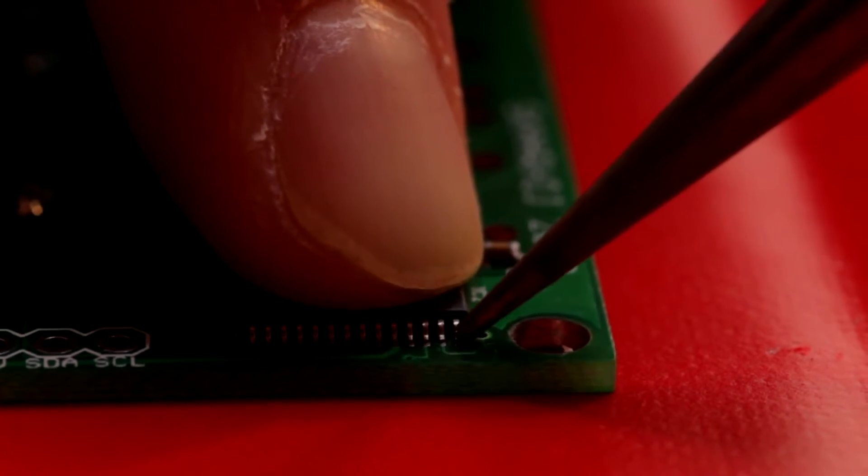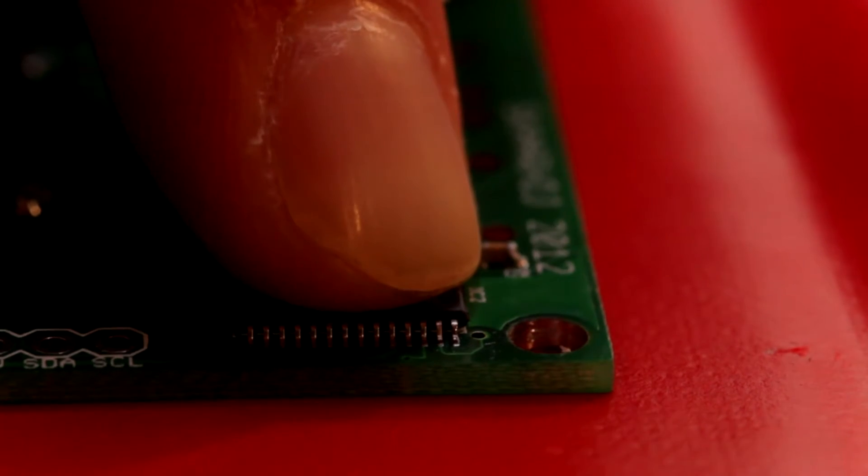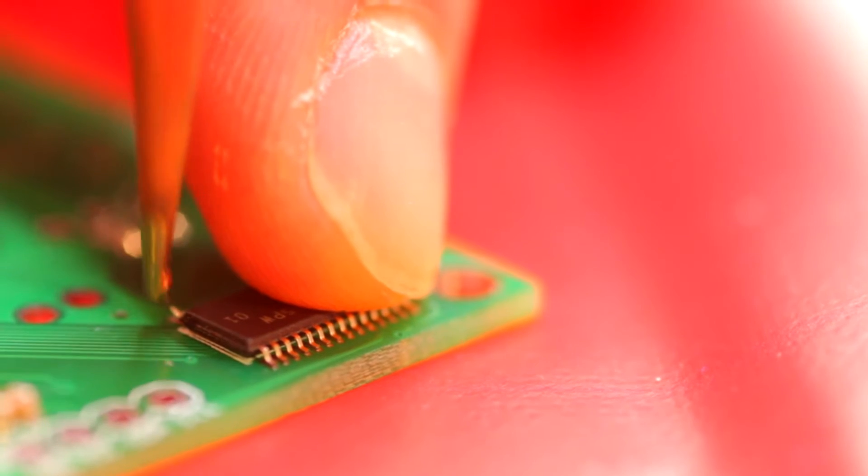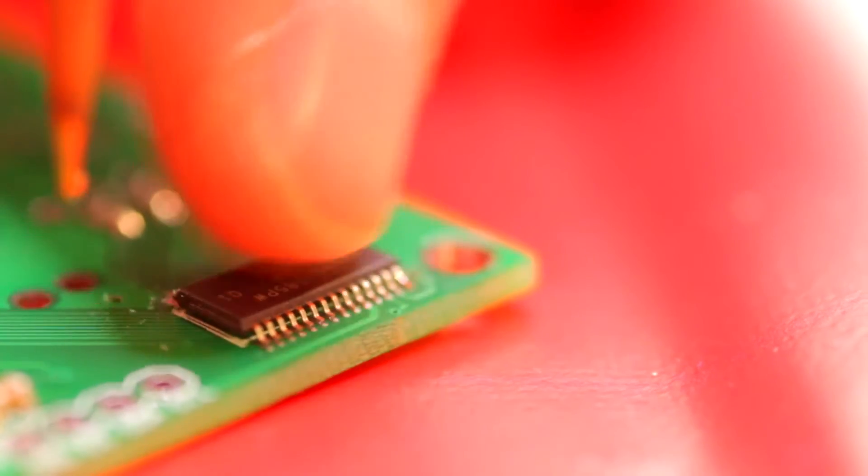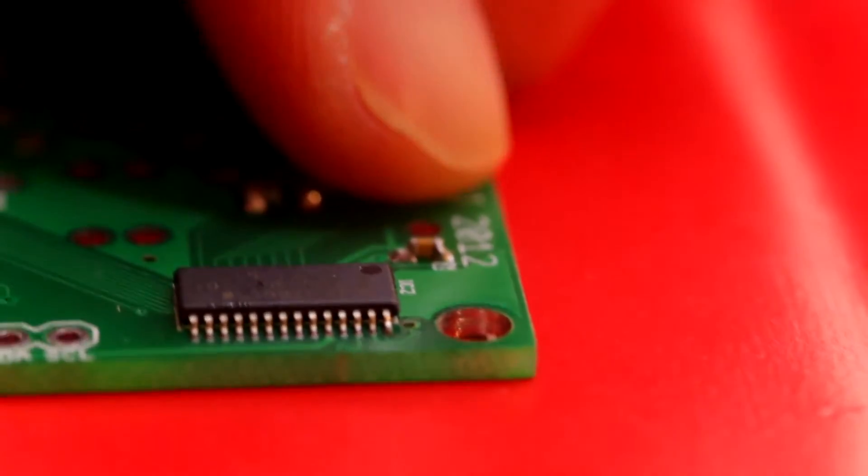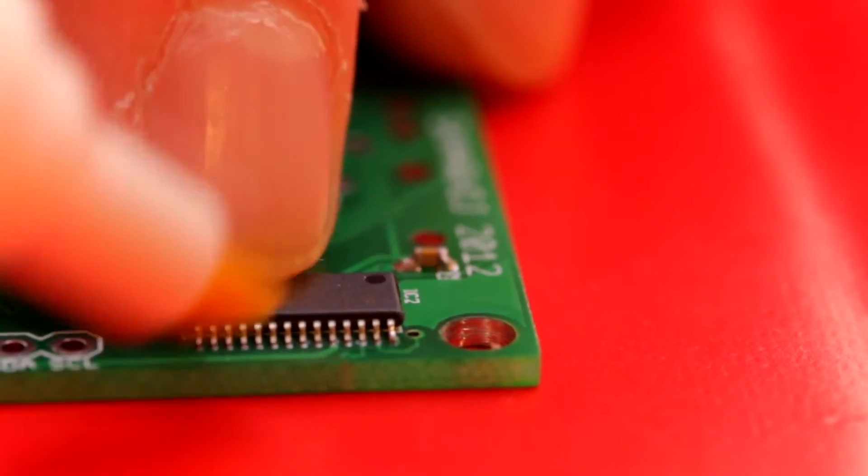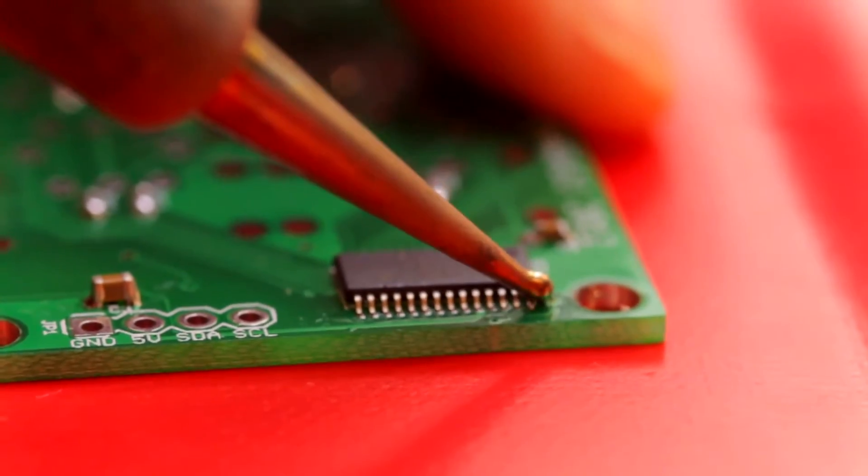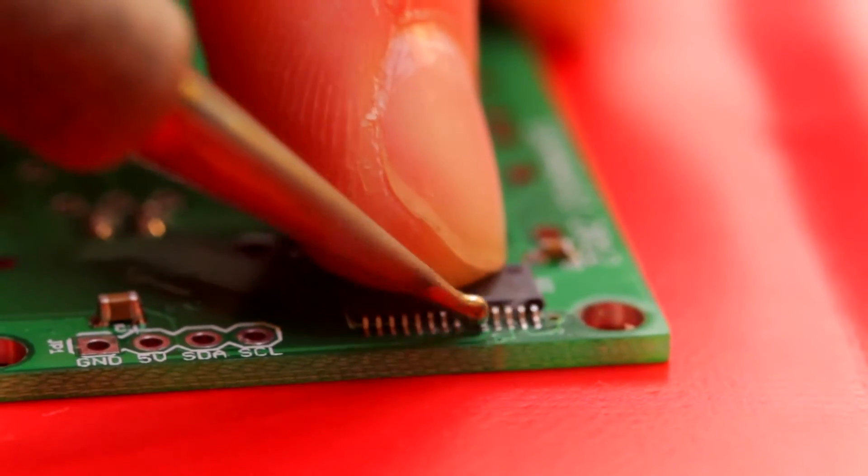Then I solder one on each corner so I have the chip fixed to the board. After I do this, I use flux and I put it on all of the legs and drag the soldering iron across the legs with just a bit of solder.